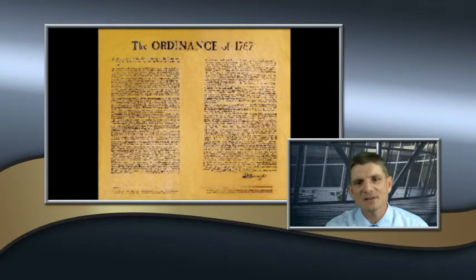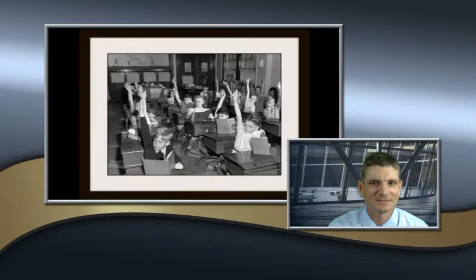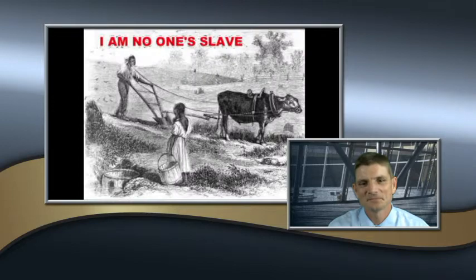The Northwest Ordinance guaranteed rights to the people, such as freedom of religion, the right to trial by jury, education would be encouraged, and the Native Americans would be treated in good faith. It also banned slavery in the Northwest Territory.